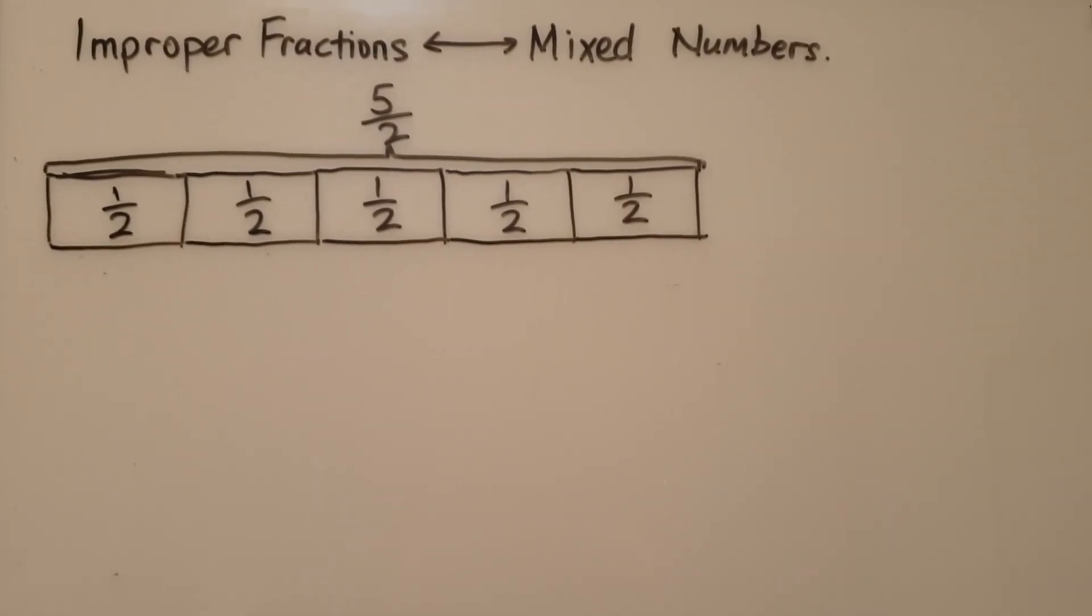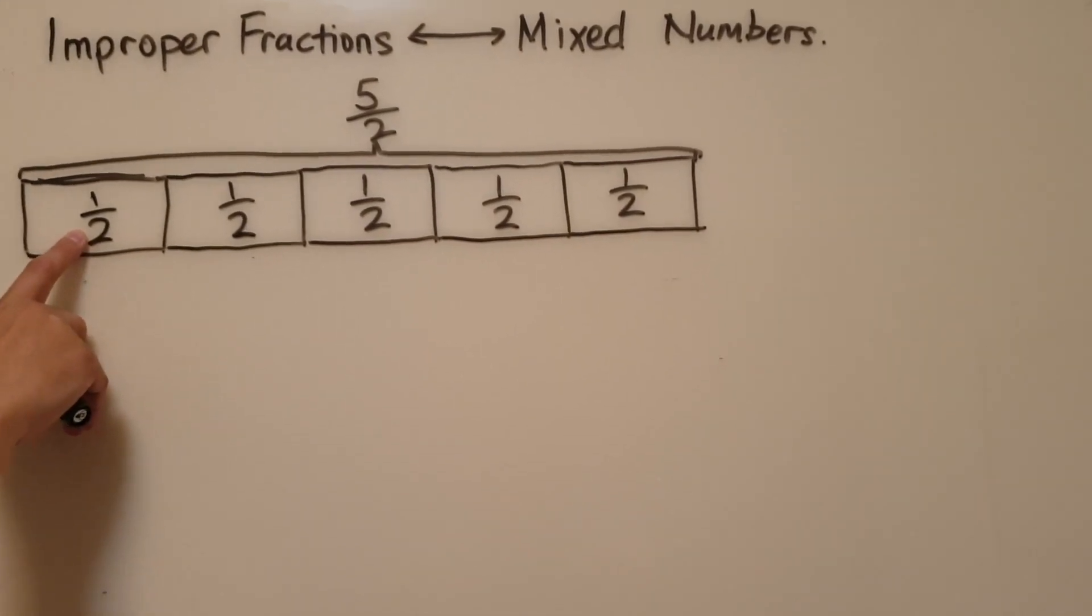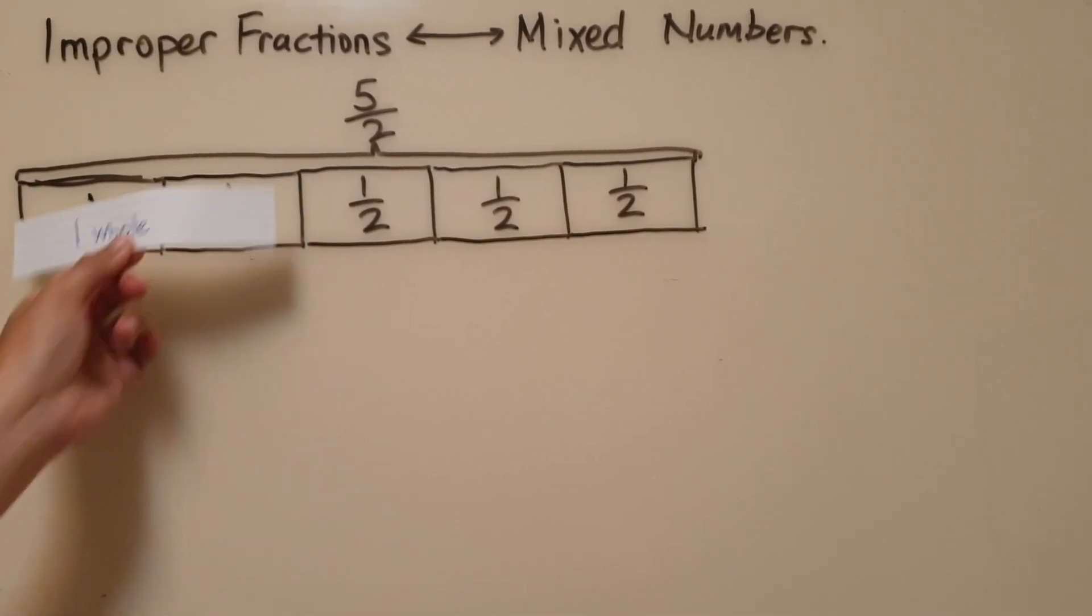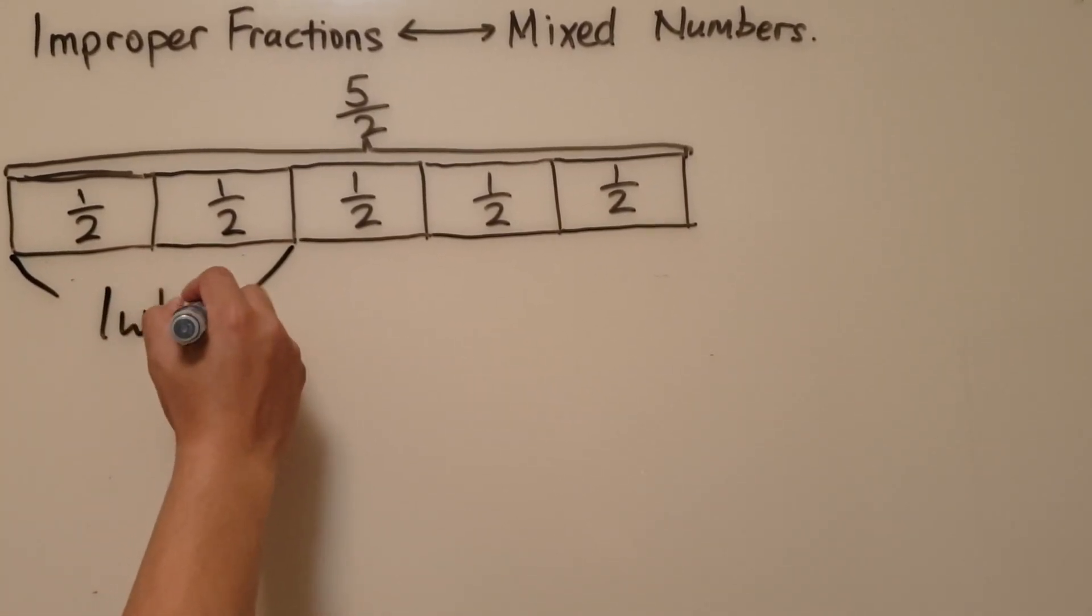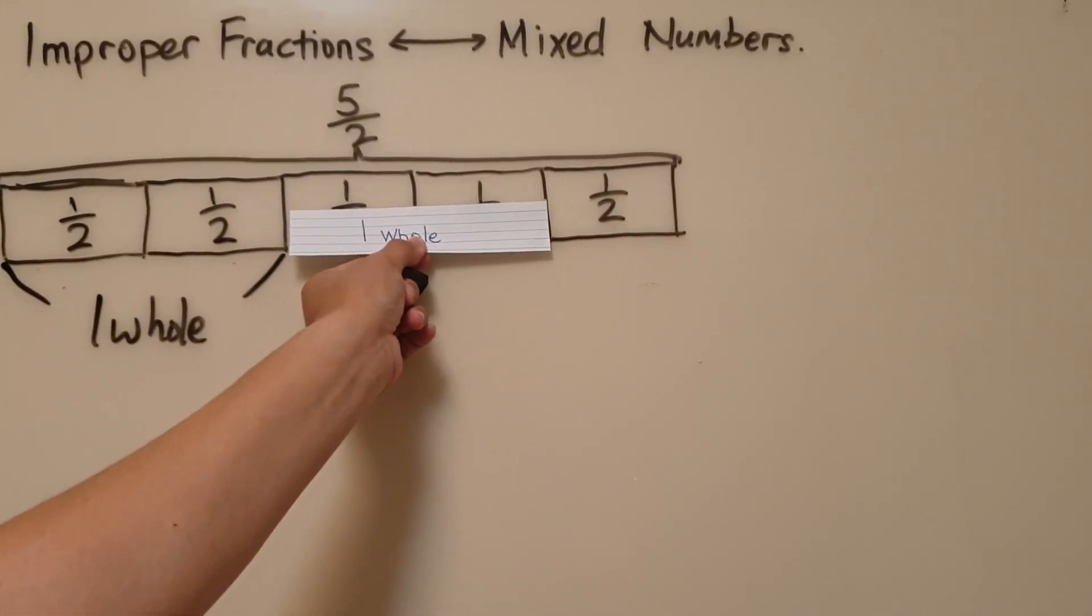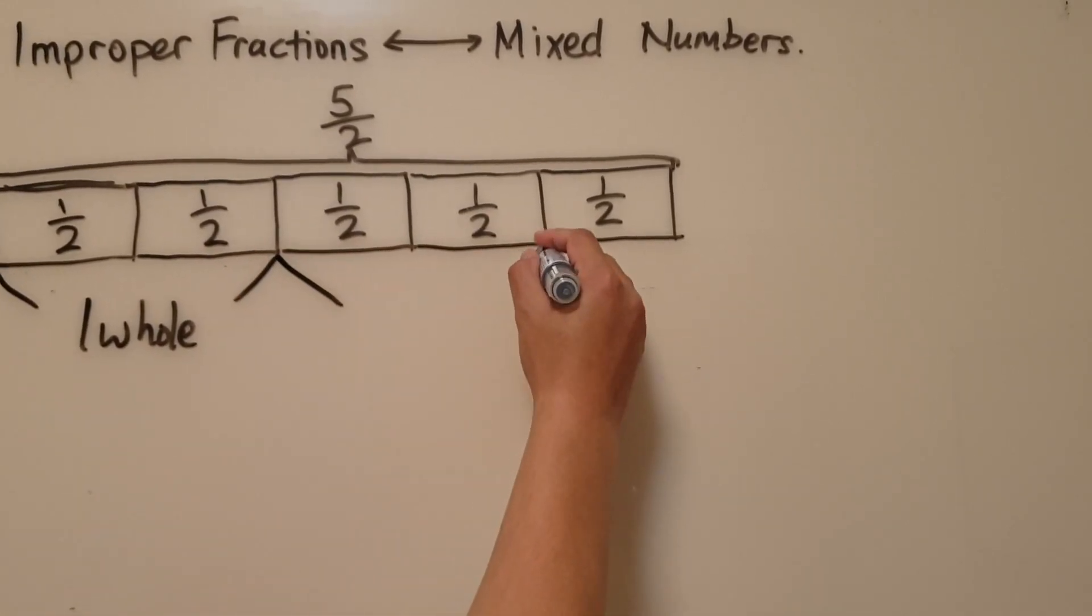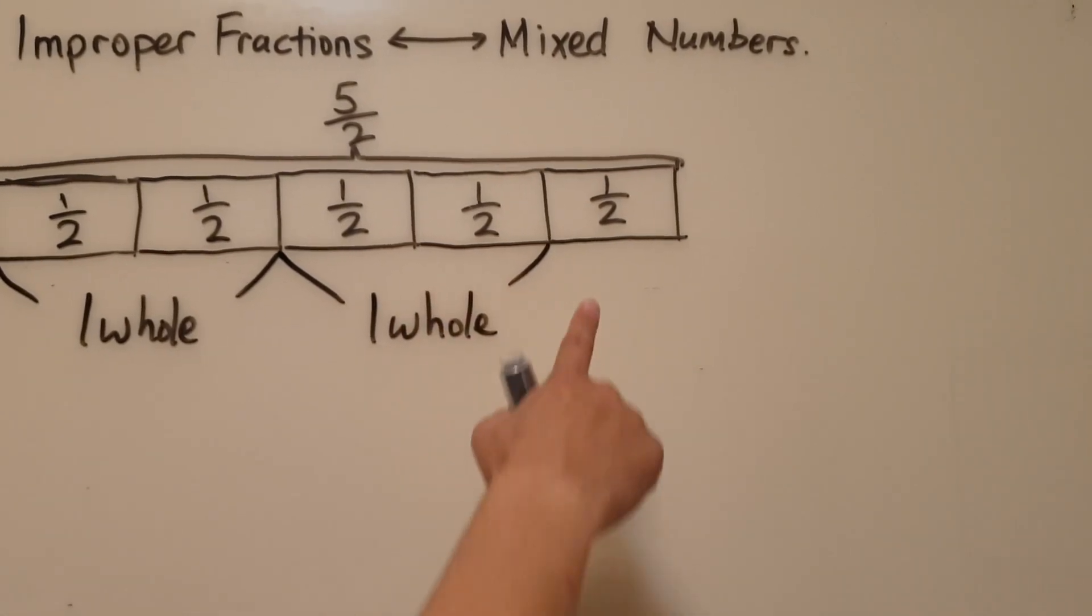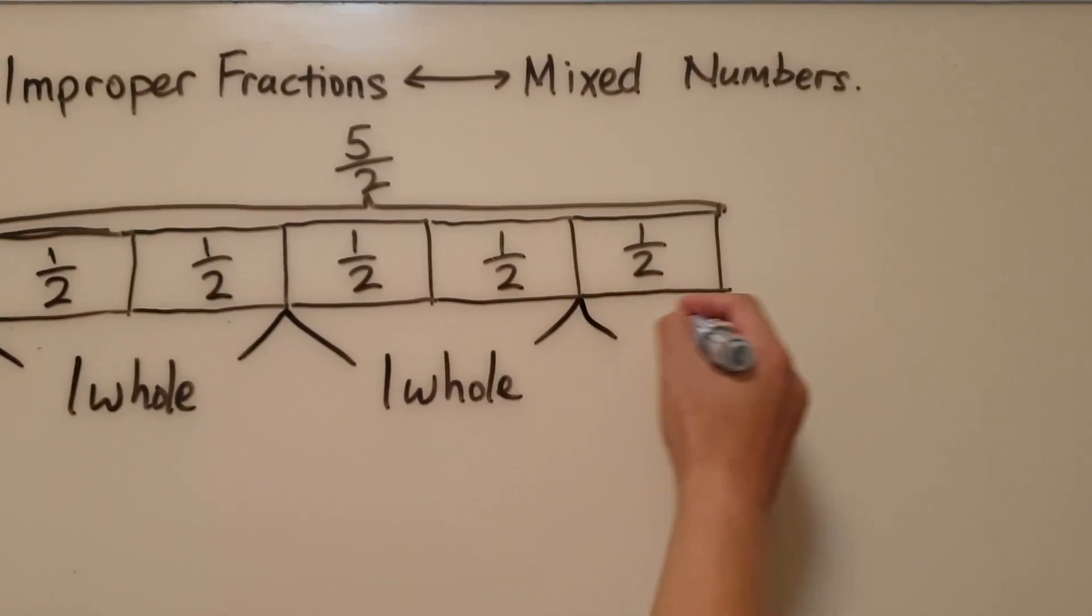You should already know that the denominator 2 tells us that I need 2 parts to make a whole. So I have one whole here. We can make another whole by combining or regrouping another 2 parts into a whole. That leaves us with one little fraction here that is not enough to make a whole, so we'll just leave this fraction alone.